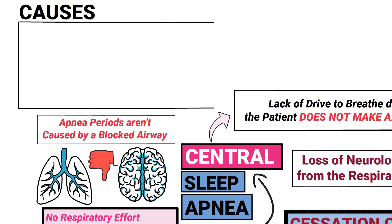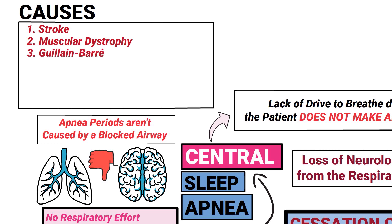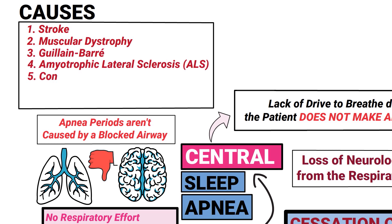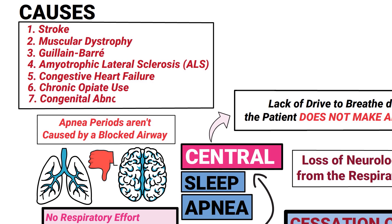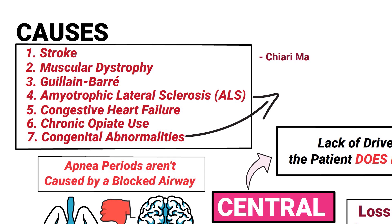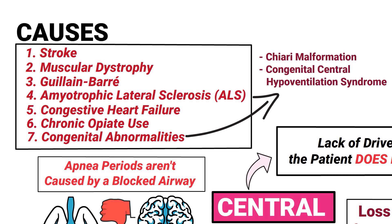Some examples of the causes of central sleep apnea include a stroke, muscular dystrophy, Guillain-Barré syndrome, ALS, congestive heart failure, chronic opiate use, and congenital abnormalities such as Chiari malformation or congenital central hypoventilation syndrome.